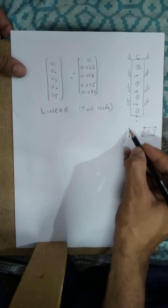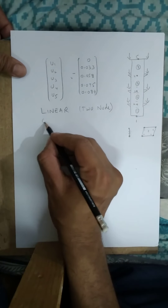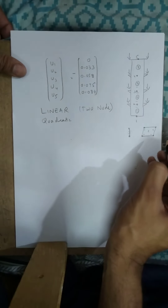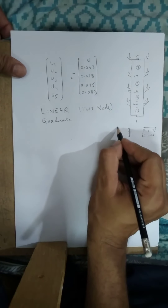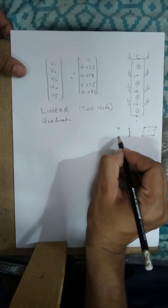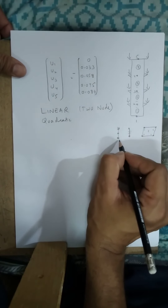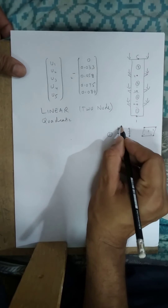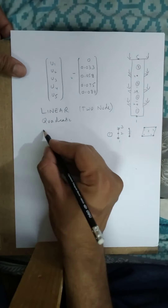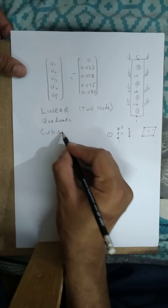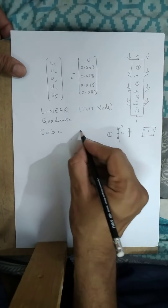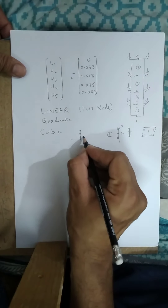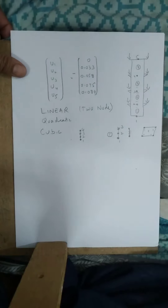We have a quadratic one-dimensional element in which we have three nodes. For example, there are three nodes in one element. We also have a cubic one-dimensional element in which we have four nodes: one, two, three, and four.